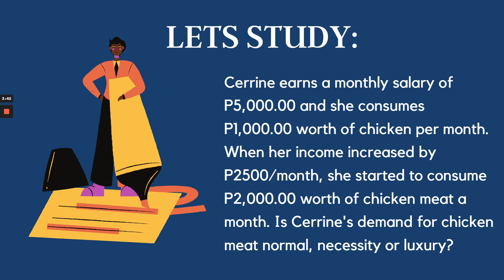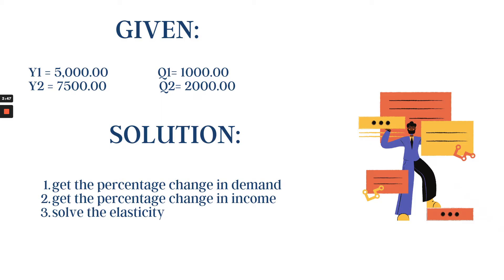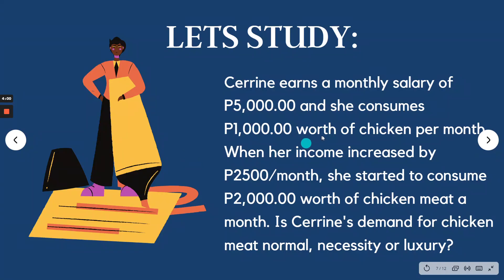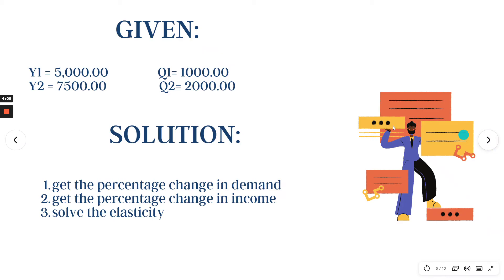In order for us to know, we have to use the formula that we covered in the previous slides. Given, we have income 1 is 5,000, income 2 is 7,500. Why is it 7,500? That's because from 5,000, it increased by 2,500, so it became 7,500. Quantity 1 is 1,000 pesos, quantity 2 is 2,000 pesos.